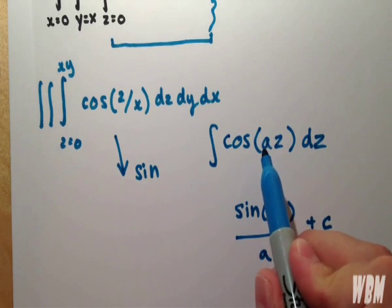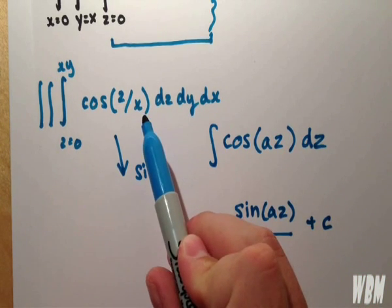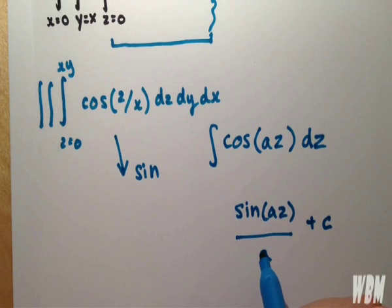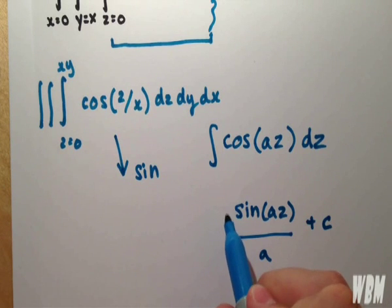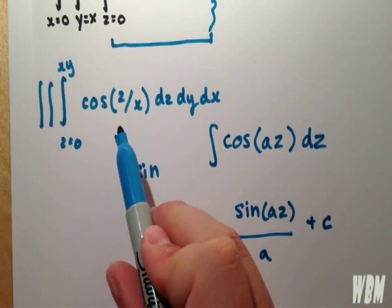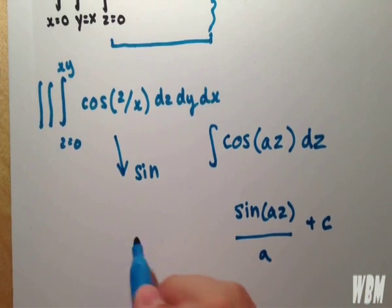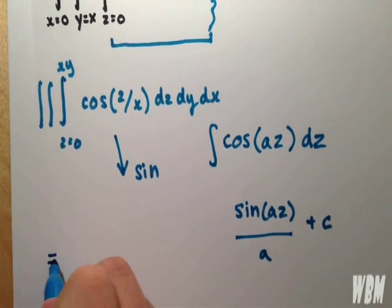Now, what if this a becomes 1 over x? Well then, quite simply, we have sine of z over x, and we bring the x up. Therefore, this becomes x sine of z over x.